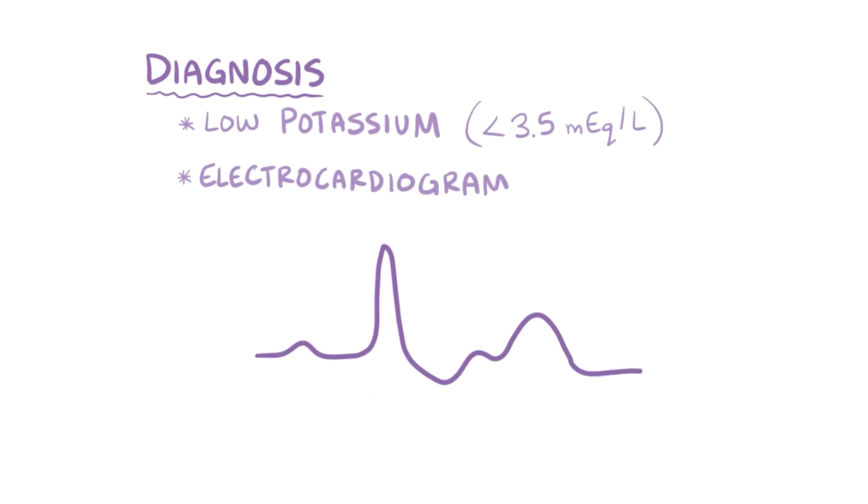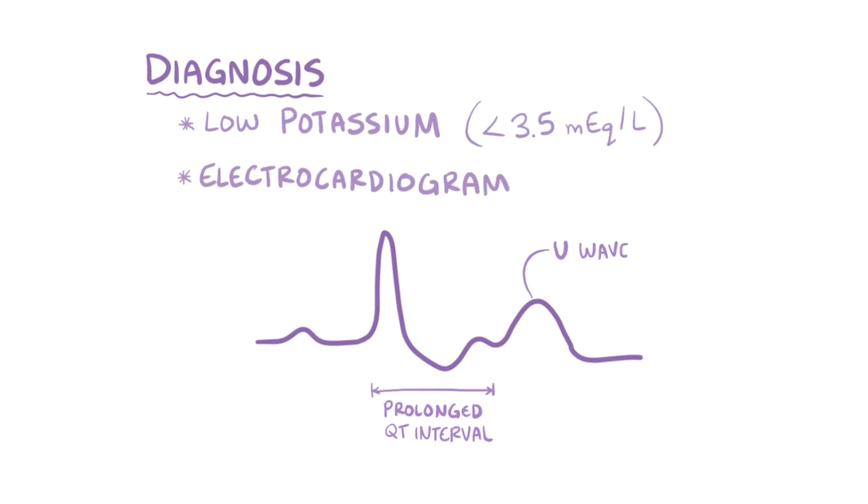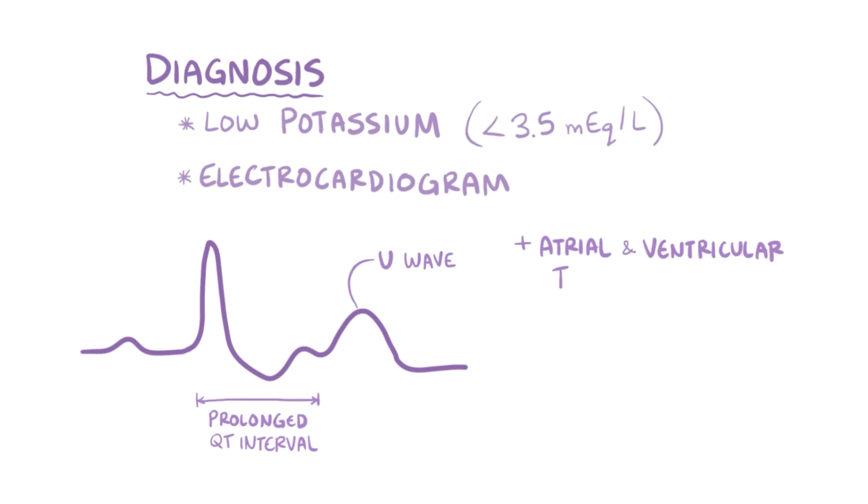Hypokalemia is diagnosed based on the presence of low levels of potassium in the blood, generally below 3.5 mEq per liter. It's also important to get an electrocardiogram, which typically shows a prolonged QT interval, appearance of a U-wave, and atrial or ventricular tachyarrhythmias.